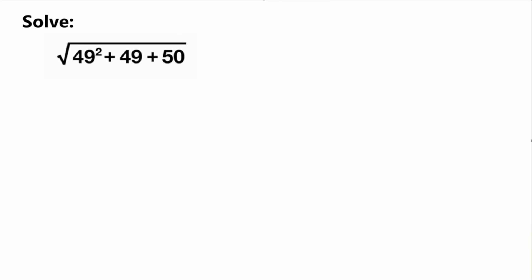The first thing that I notice, and what you probably noticed also, is that we have 49 squared plus 49. So there's two 49s here. And there's something that we can do with this. Since both of these terms have a 49 in them, 49 squared is just equal to 49 times 49. We can factor out a 49 from these two terms. So that will look like this.